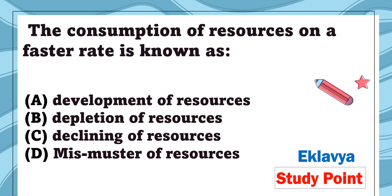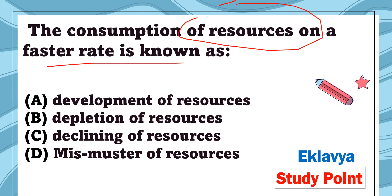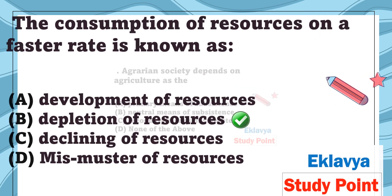Question 11: The consumption of resources at a faster rate is also known as — option A: development of resources, option B: depletion of resources, option C: declining of resources, option D: misuse of resources. The correct answer is depletion of resources.